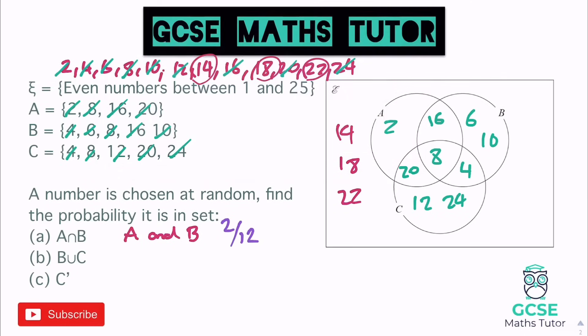Next, B∪C — 'B or C'. Any numbers that are in B or C: all numbers in the C circle and all numbers in the B circle. Some of them are also in A, but they are still in B or C — it doesn't say they can't be in A. Counting: 5 numbers in C and an additional 3 just in B, giving 8 numbers out of 12.